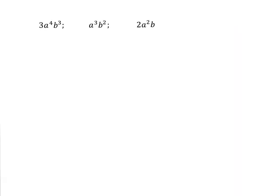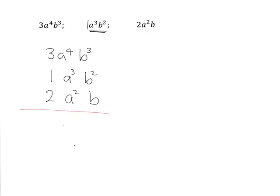Have a look at this next example and find the highest common factor of these three expressions. I'll write them all down one underneath each other in order: 3a⁴b², a³b², and 2a²b. Note that a³b² has no written coefficient, which means the coefficient is 1, so it's 1·a³b².